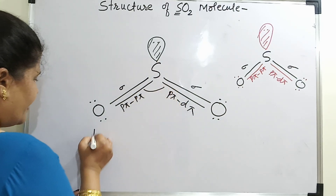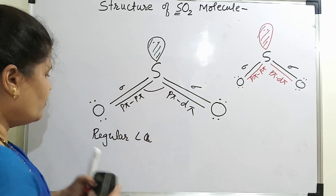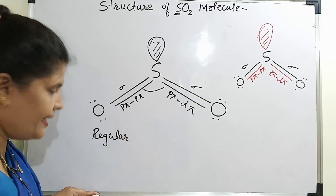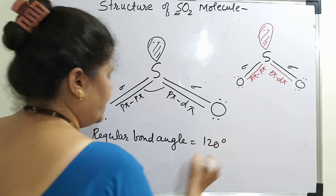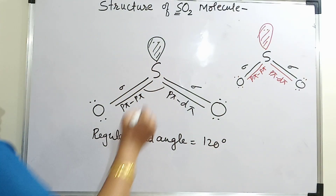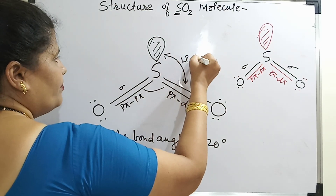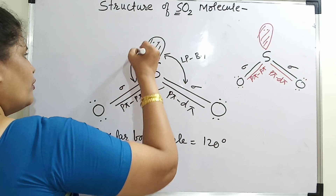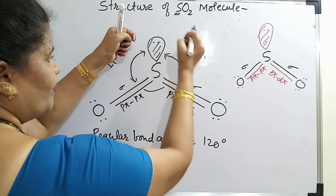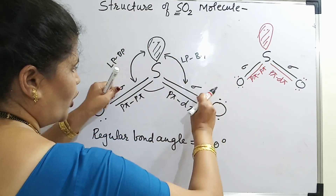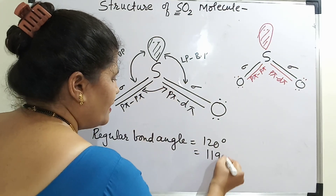What is the bond angle? The regular bond angle for SP2 hybridization is 120 degrees. But as there is a lone pair, the lone pair–bond pair interactions are operating here on both sides. This lone pair will push the bonds down, so what will happen to the bond angle is it will decrease to 119 degrees.